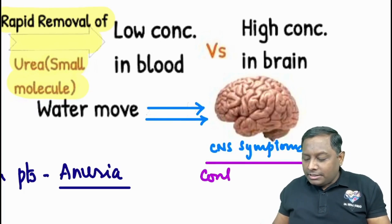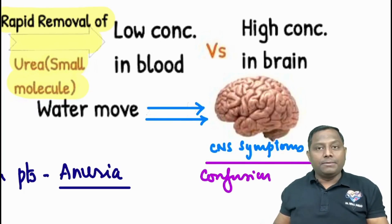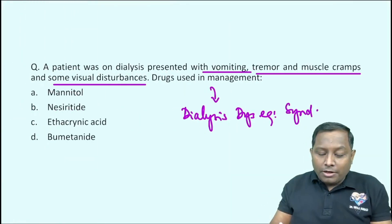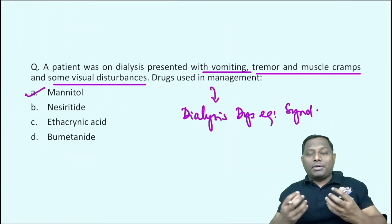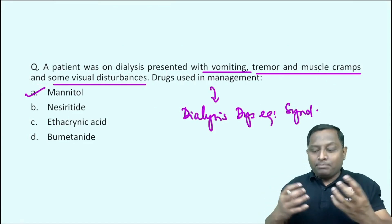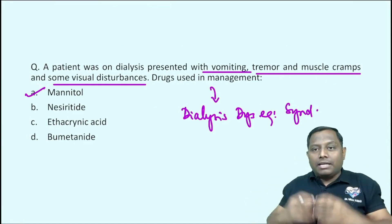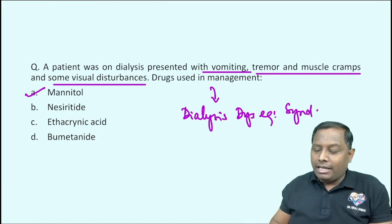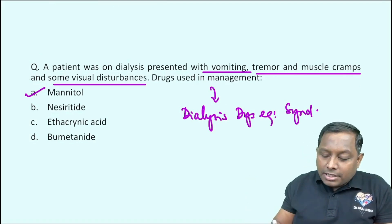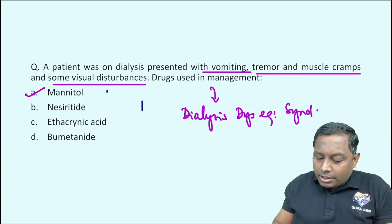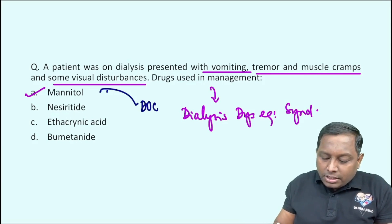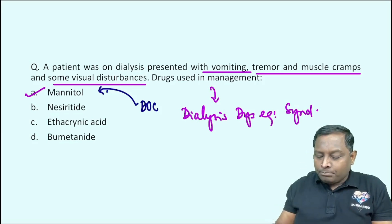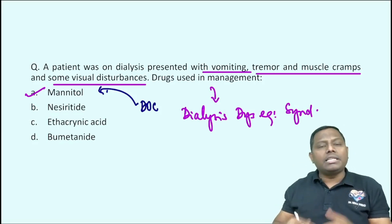The patient will have CNS symptoms — all the CNS symptoms mentioned — in addition to visual symptoms, tremor, and confusion. This is a case of dialysis disequilibrium syndrome and we have to give an osmotic diuretic. They have osmotic properties, they will pull urea and other molecules causing the symptoms, and they are considered the drug of choice in dialysis disequilibrium syndrome.